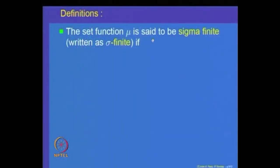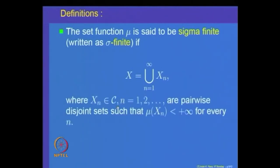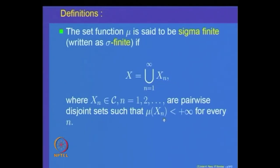Let us take a set function mu and we will say that it is sigma finite. A mu is said to be sigma finite if we can write the whole space as a union of sets X_n, n = 1 to ∞, such that these sets are pairwise disjoint, each X_n belongs to the domain C, and mu(X_n) is finite. This is what is called sigma finite set functions.